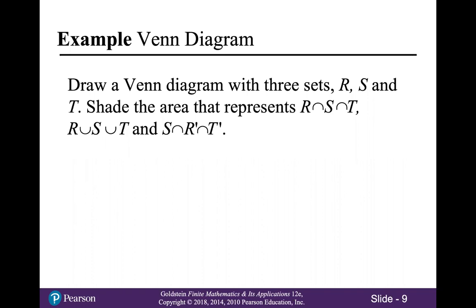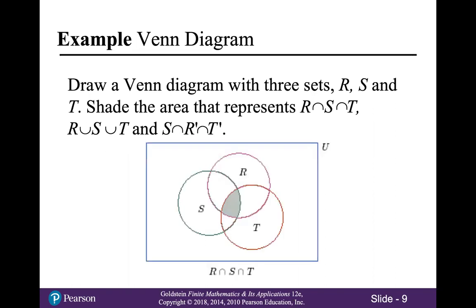In this example, we will draw a Venn diagram with three sets called R, S, and T, and then we'll shade the areas that represent R intersect S intersect T, R union S union T, and the intersection of S, R complement, and T complement. The shaded region here represents R intersect S intersect T — these are the points that are inside all three circles.